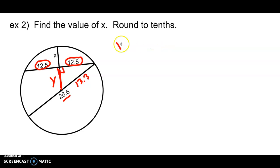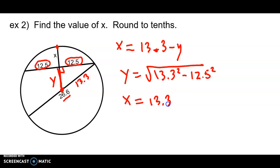I want you to think about that. X will equal 13.3 subtract the Y. Because this is a radius of the circle. Okay. So we're going to find the Y value. Y equals the square root of 13.3 squared minus 12.5 squared. Just use the Pythagorean theorem.